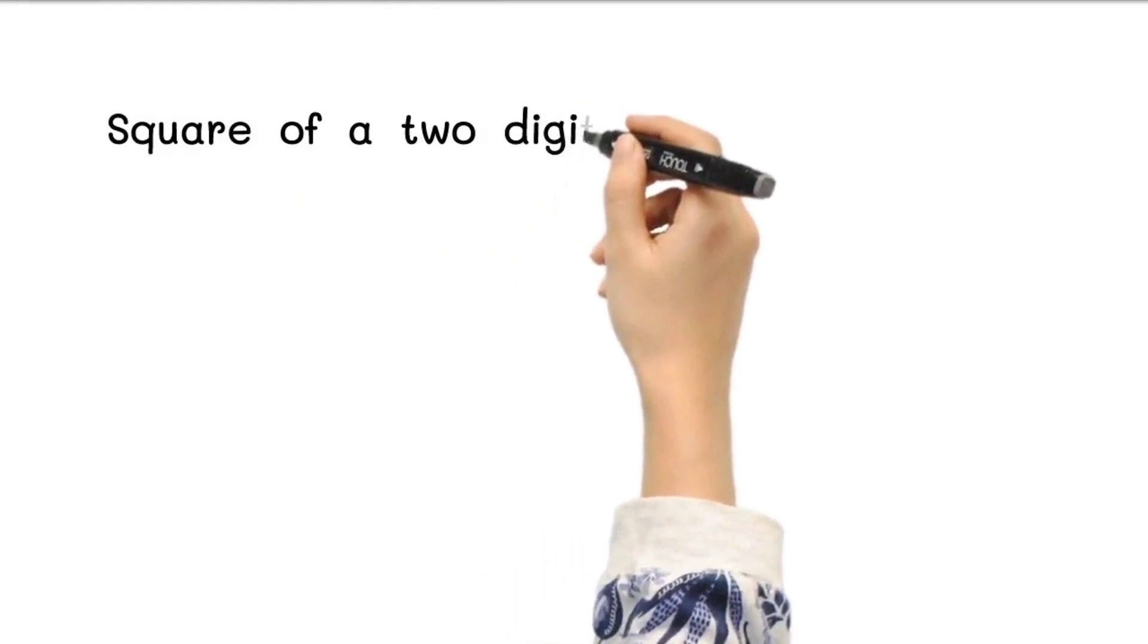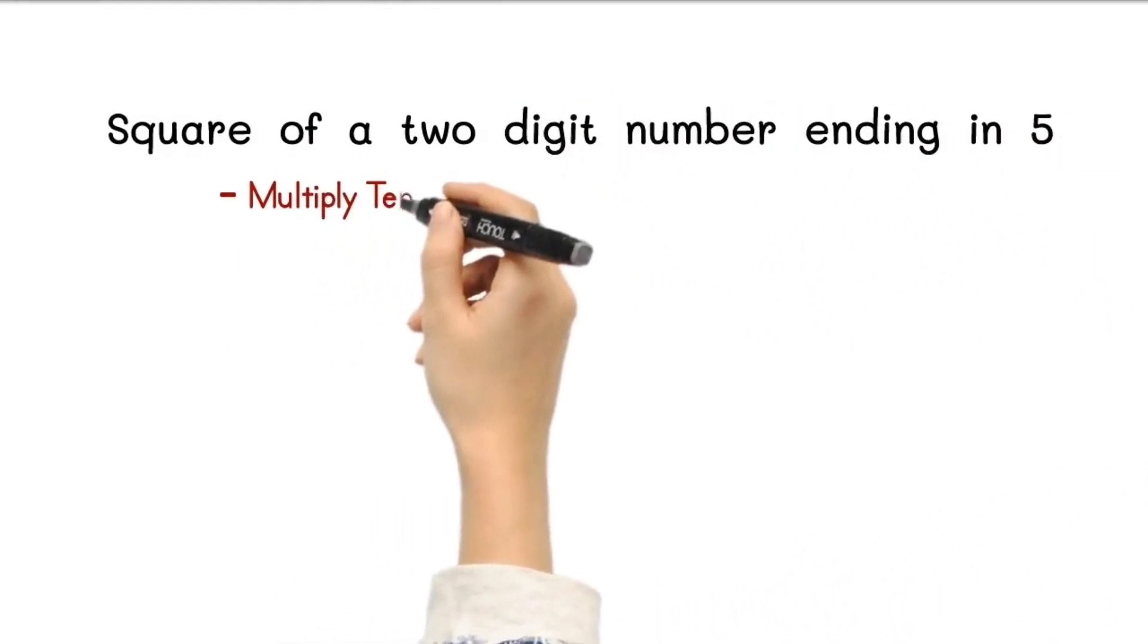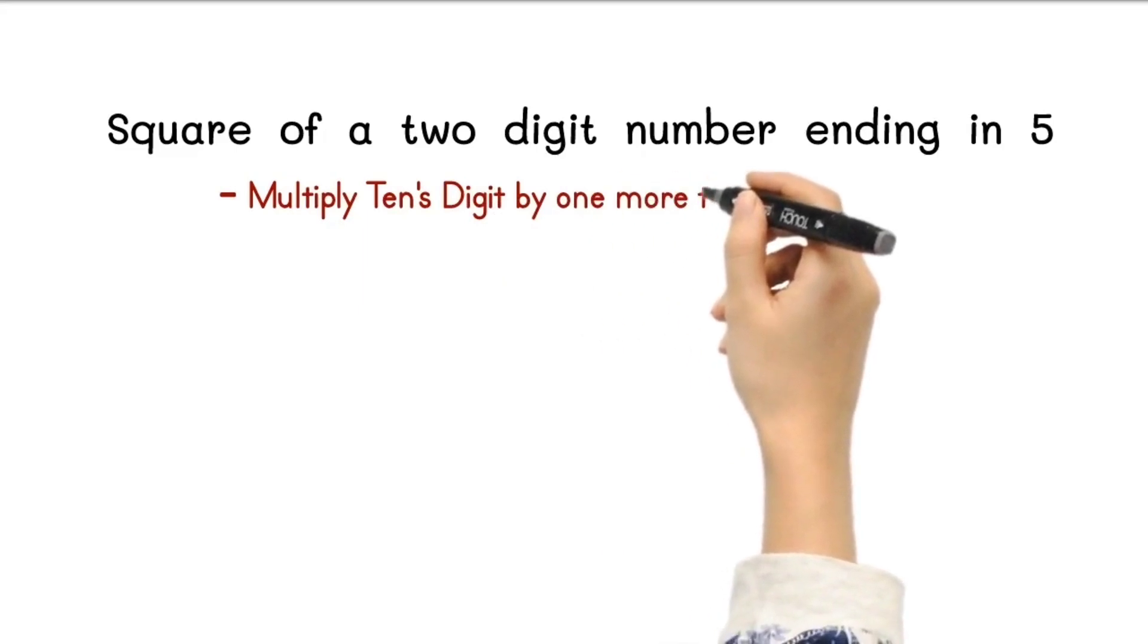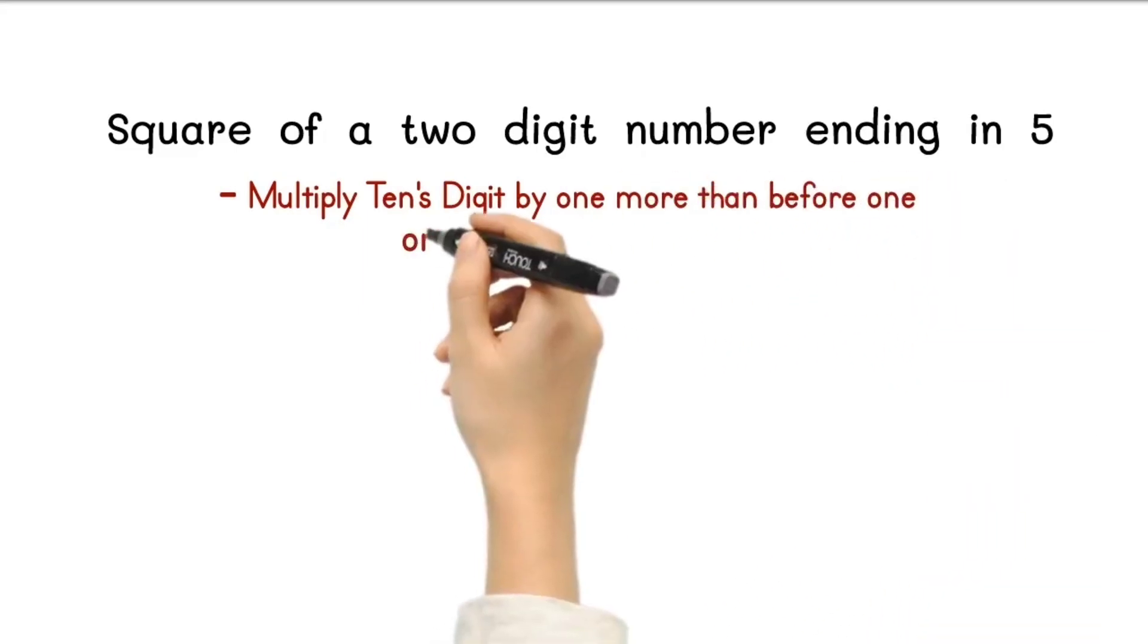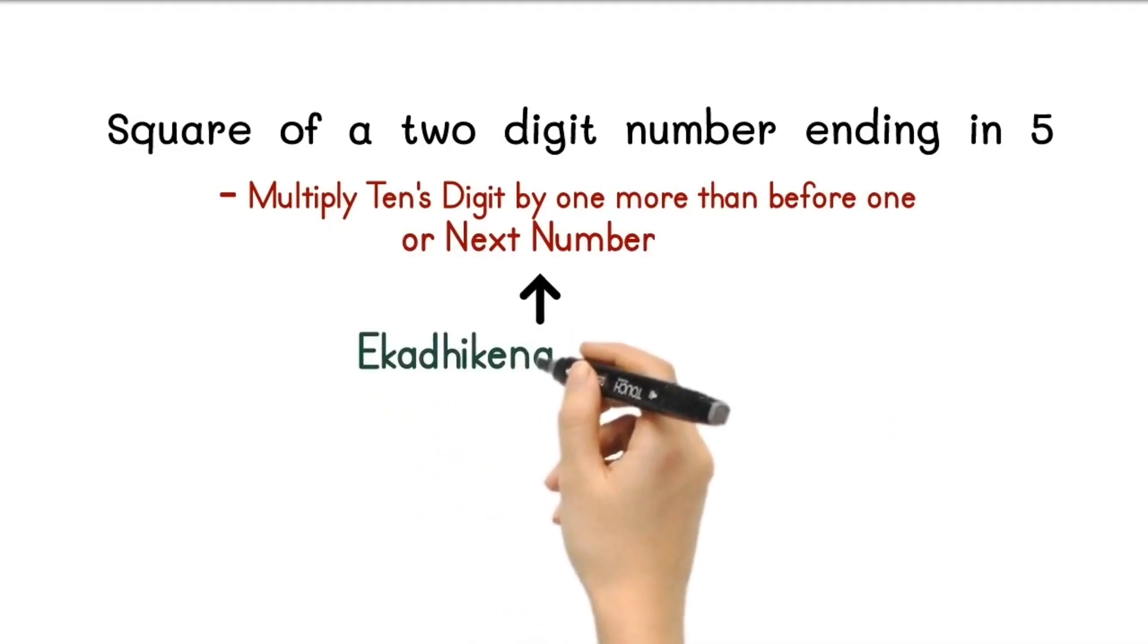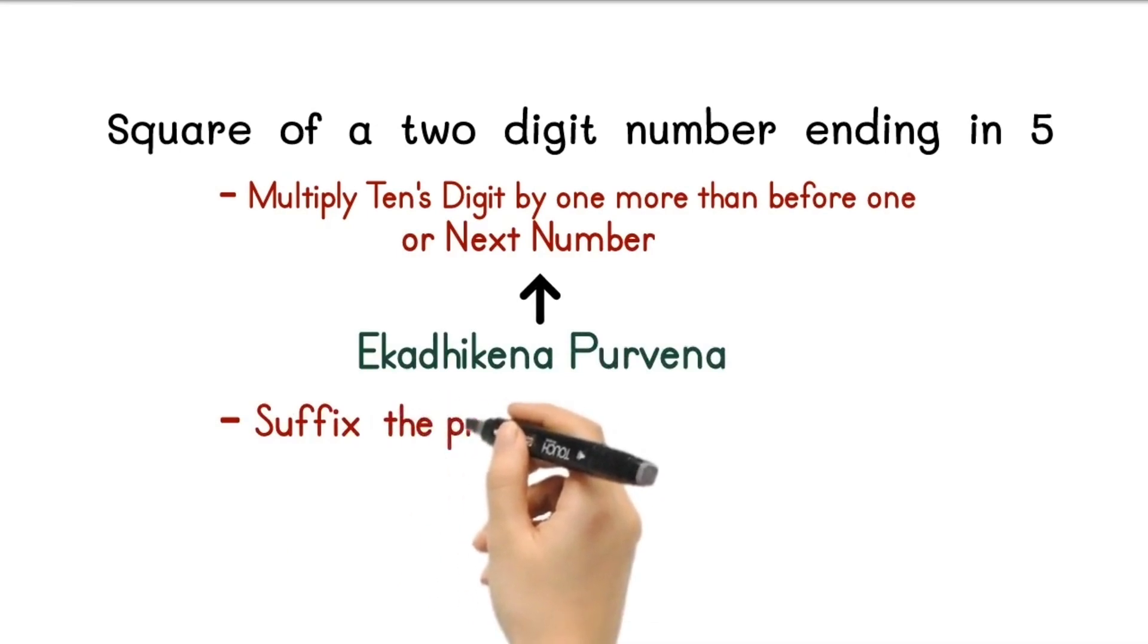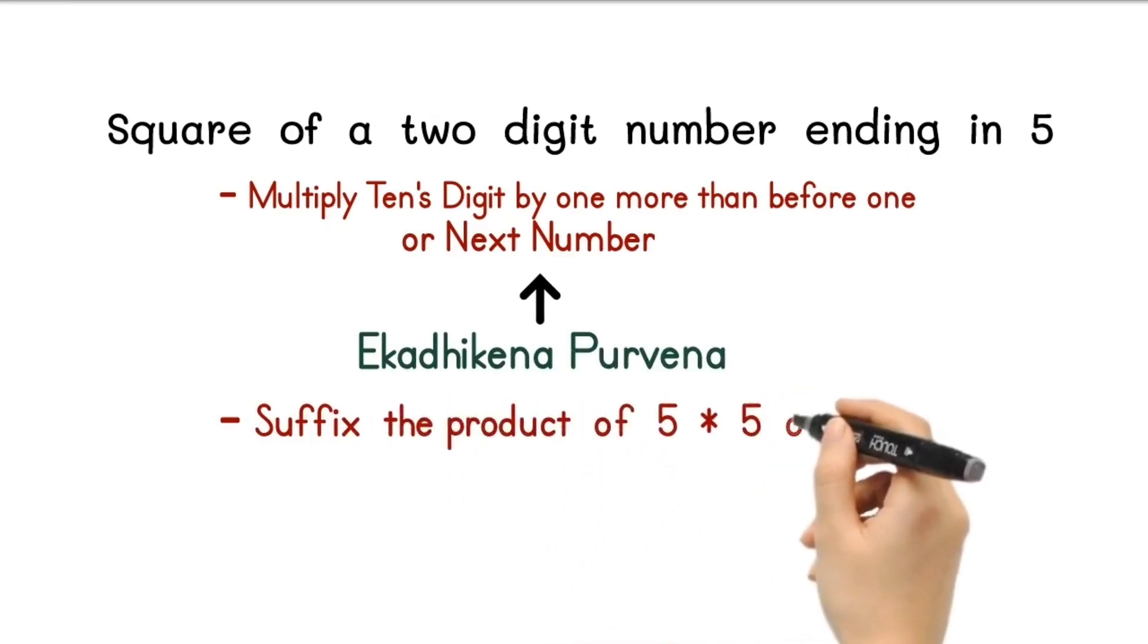To find the square of two digit number ending in 5, multiply the tens digit by one more than the one before, or by the next number. That means here we are going to use Vedic Math Sutra Ekadhikena Purvena. Then suffix the product of 5 multiplied by 5, or 25.